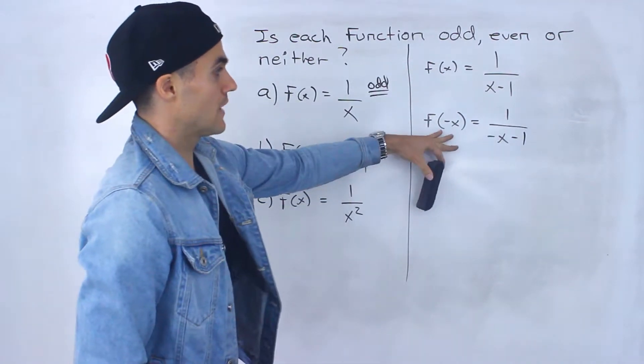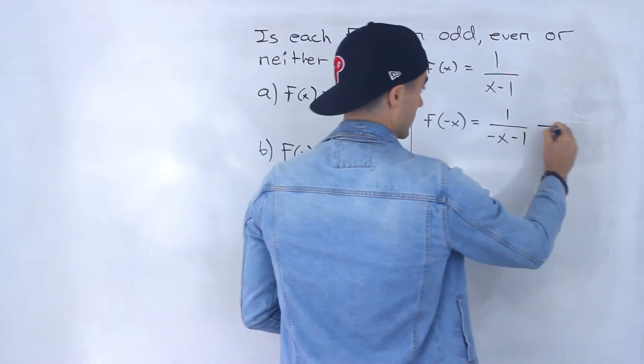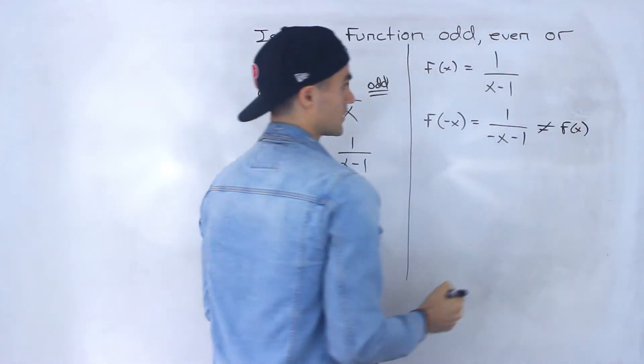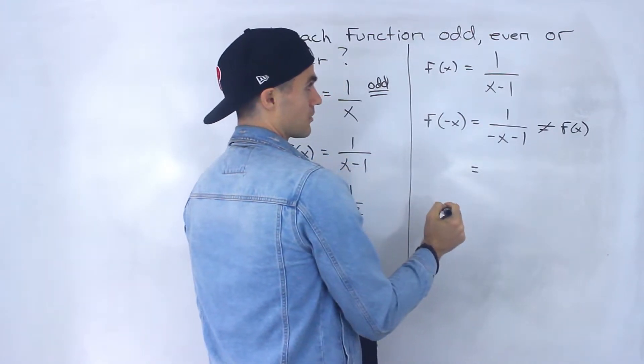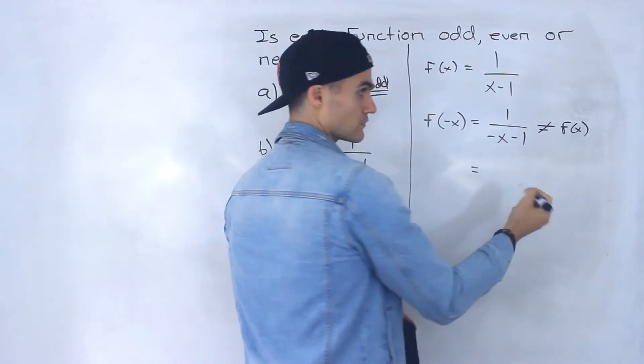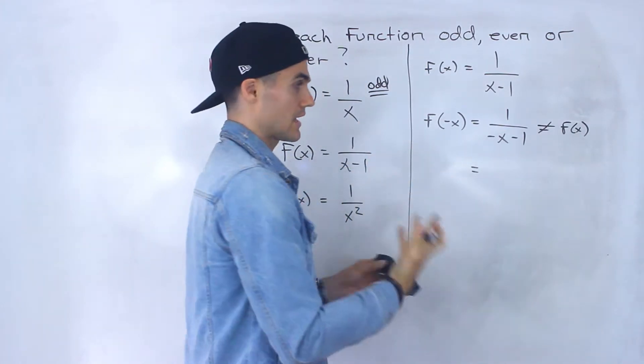So notice that f of negative x, from here, we can tell, doesn't equal f of x. So we know it's not going to be even. Let's try to make it perhaps equal negative f of x, like we did with part a, because if that happens, then it's going to be odd.